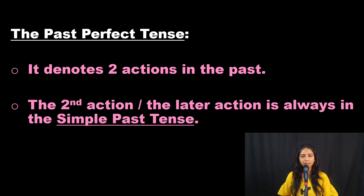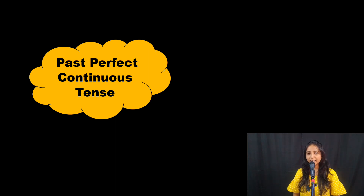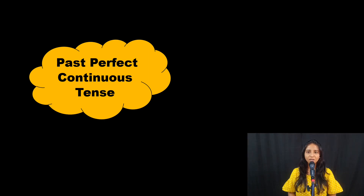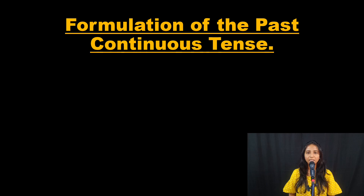I hope you've all understood the usage of the past perfect tense. Now let's get to our next tense, the past perfect continuous tense. The word itself sounds big and complicated, I know — but don't worry, we'll simplify it. Let's start by having a close look at its formulation with the help of a sentence.